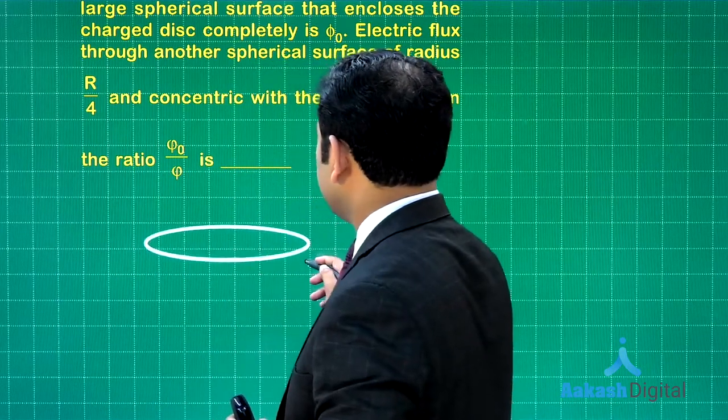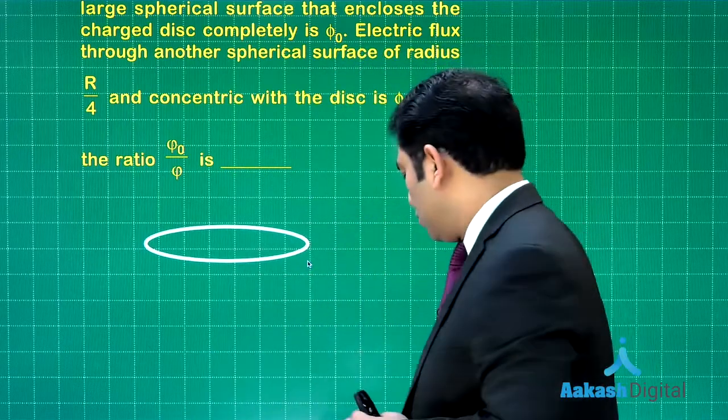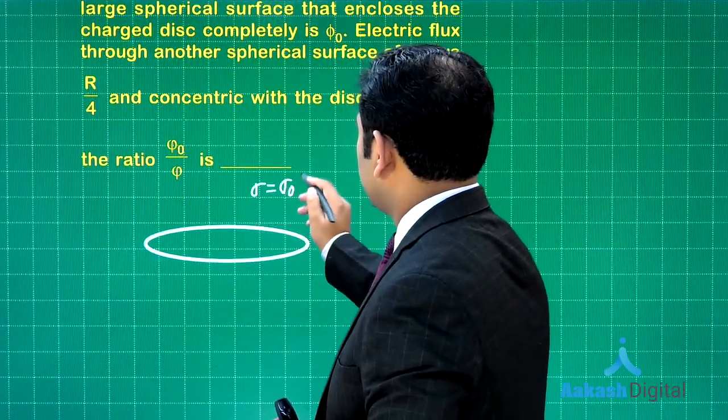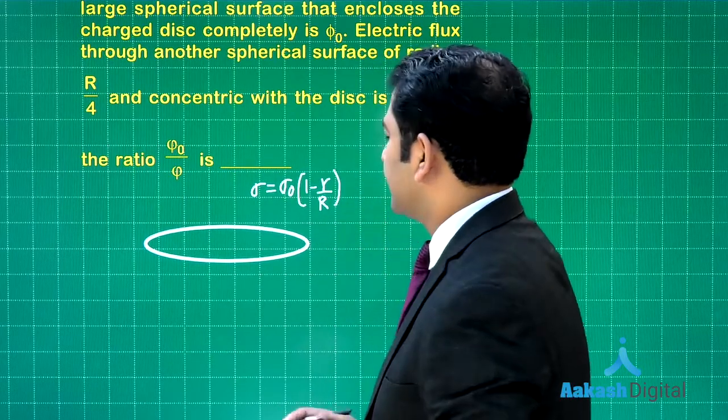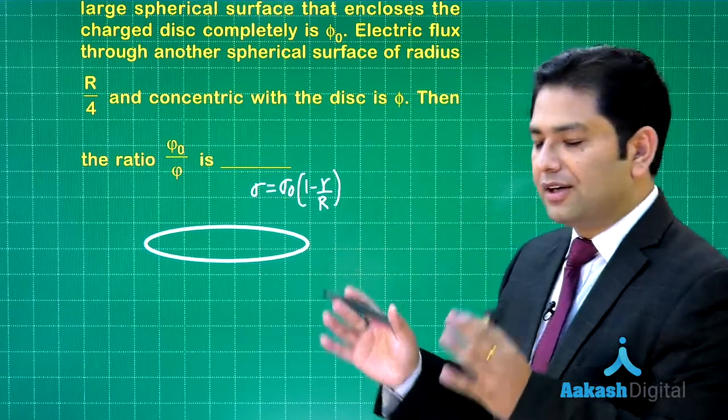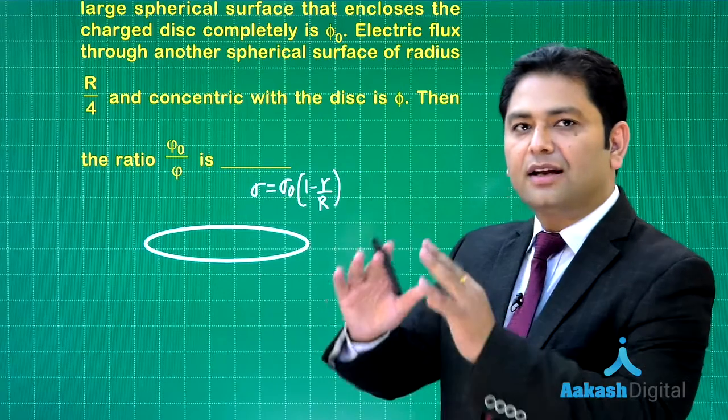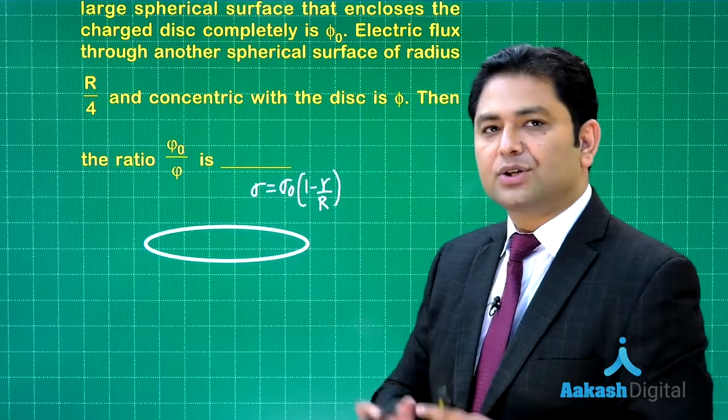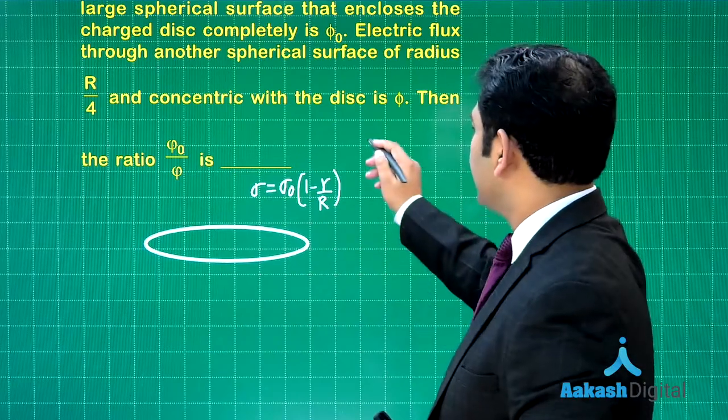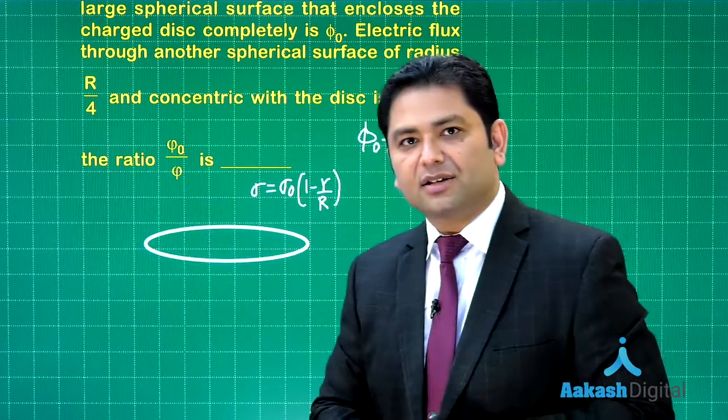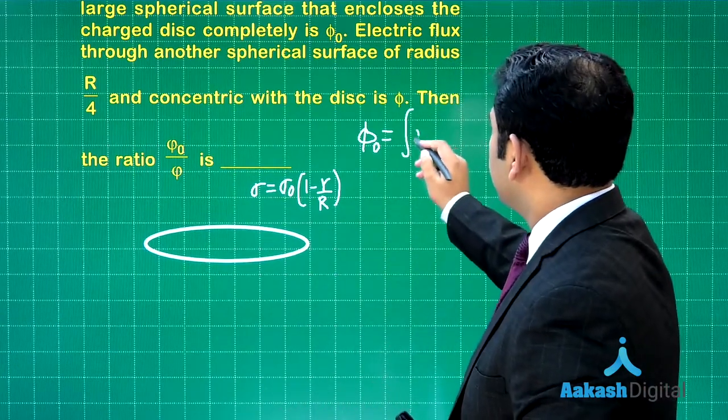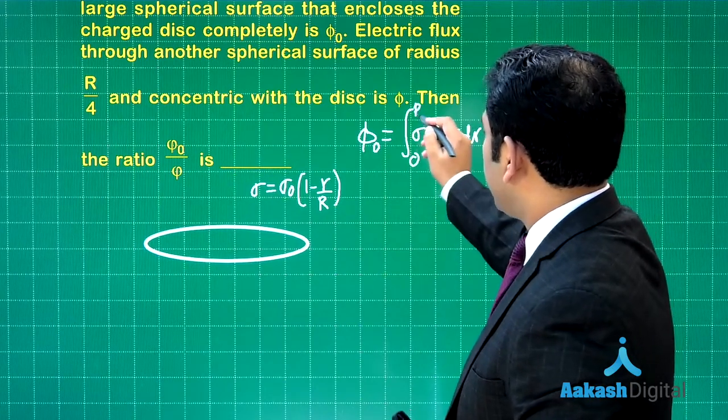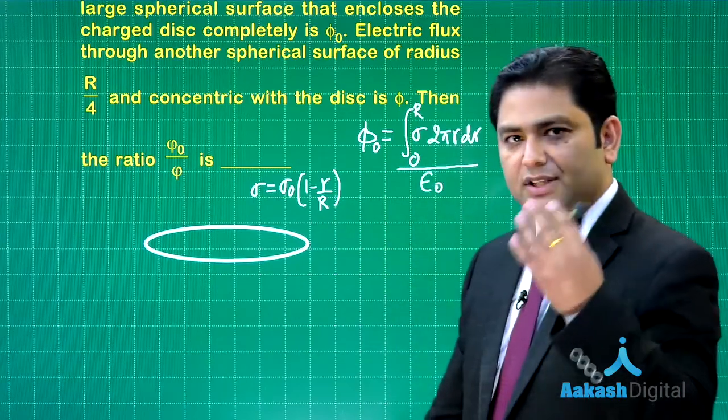Let me show how the flux can be calculated. This is the disk, and the density is σ₀(1 - r/R). First, let me calculate the flux through the larger sphere, a very large sphere. Just imagine there is a huge sphere which encloses the disk. How much will be the value of φ₀? The total charge enclosed divided by ε₀. The total charge enclosed is σ times 2πr dr from 0 to capital R, divided by ε₀.